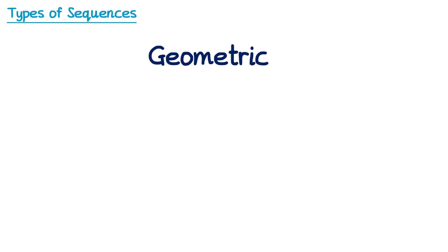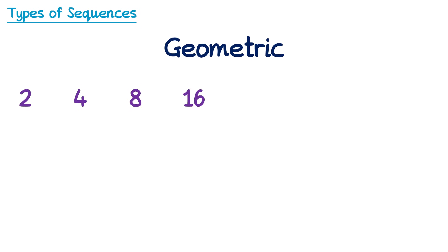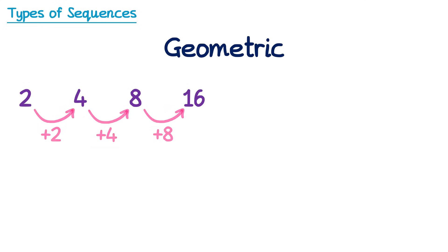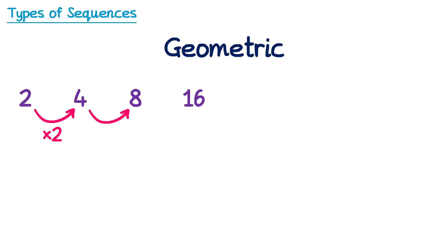We'll begin by looking at geometric sequences. Let's take a look at this sequence. We can check if it's a linear sequence by working out how to get from one term to the next by adding or subtracting. To get from 2 to 4 you add 2, from 4 to 8 you add 4, and 8 to 16 you add 8. Since the differences are not the same, we know this is not a linear sequence — instead, it's geometric.